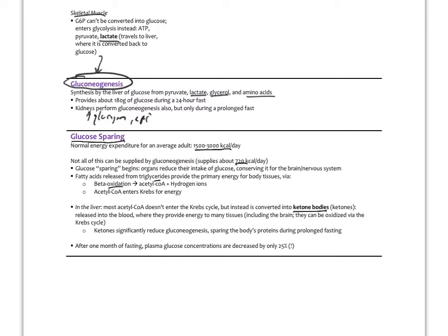Ketones significantly reduce the burden on gluconeogenesis and spare the breakdown of muscle protein. In the liver, fatty acids broken down to acetyl-CoA are converted to ketone bodies rather than entering the Krebs cycle, and those ketones nourish many tissues including the brain. Interestingly, after one month of fasting, plasma glucose levels only drop by about 25%, demonstrating how effectively the body maintains glucose by shifting other tissues to fat and ketone body utilization.